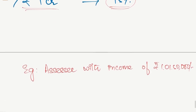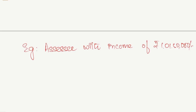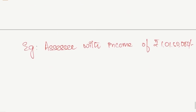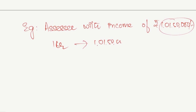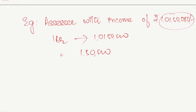Now let us consider one illustration for the calculation of marginal relief. Marginal relief is the relief given to those assessees whose income exceeds marginally above the surcharge limit. Here the surcharge limit is 1 crore. The assessee's income in this case is 1 crore 1 lakh 50,000, so the income has exceeded the limit by only 1 lakh 50,000. Because of this, the assessee is now supposed to pay extra tax — we will see how.